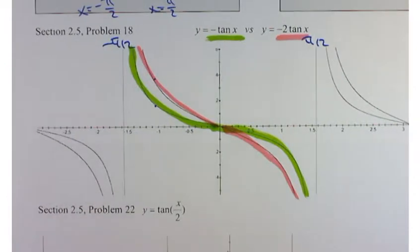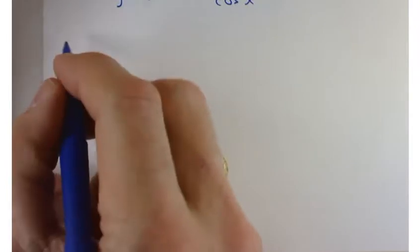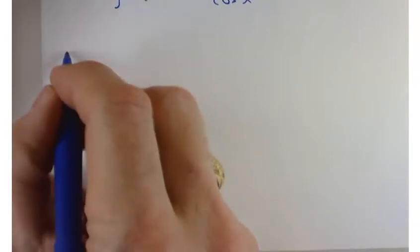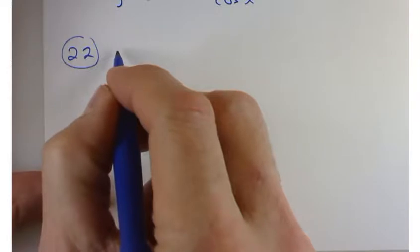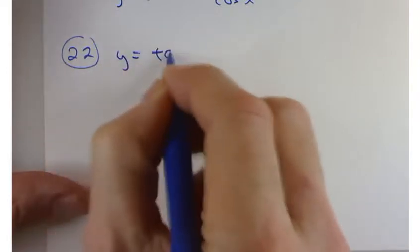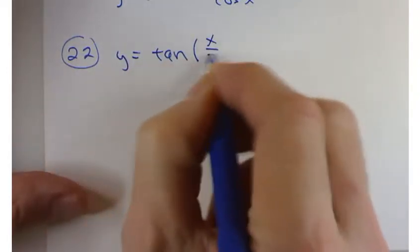But let's see if we can't figure out what the graph of problem number 22 is going to look like. And our work here for problem number 22 is going to be very similar to what our work was for problem number 28, 30, 32. You're first going to have to start by considering where is this thing going to have its asymptotes. So let me do that here, problem number 22. We've got y equals the tangent of x over 2.